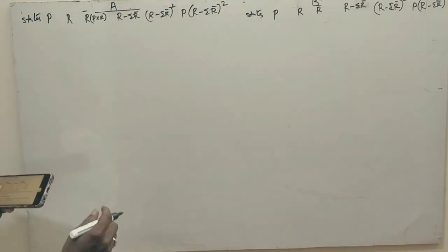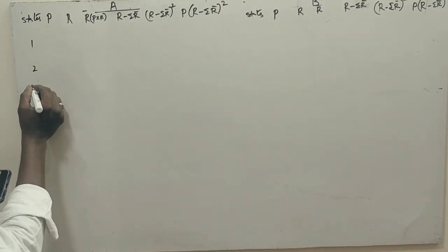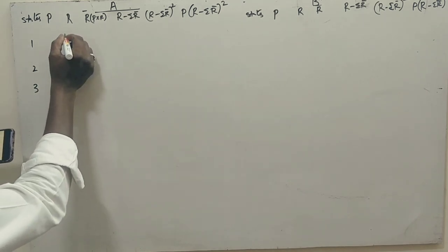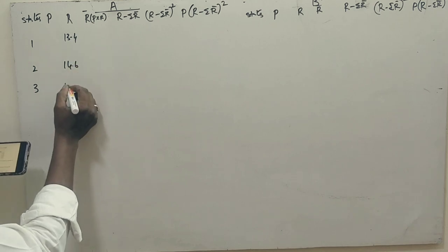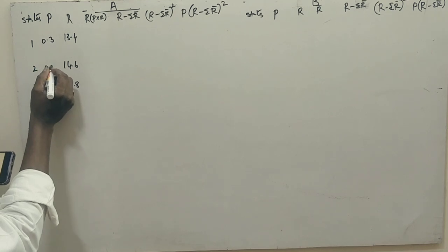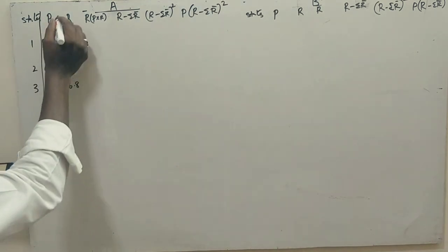For Security A, we have returns for states 1, 2, and 3. Returns are 13.4, 14.6, and 16.8. The probabilities are 0.3, 0.5, and 0.2.